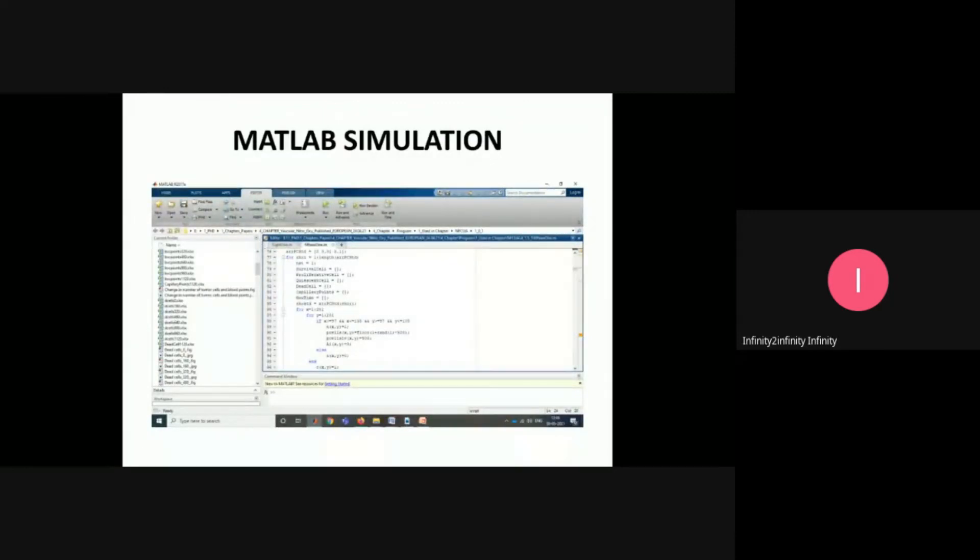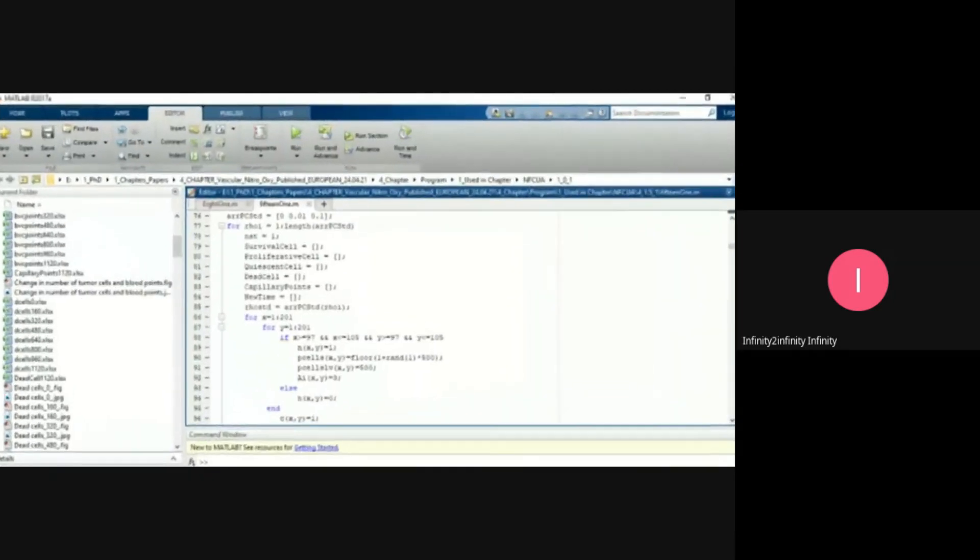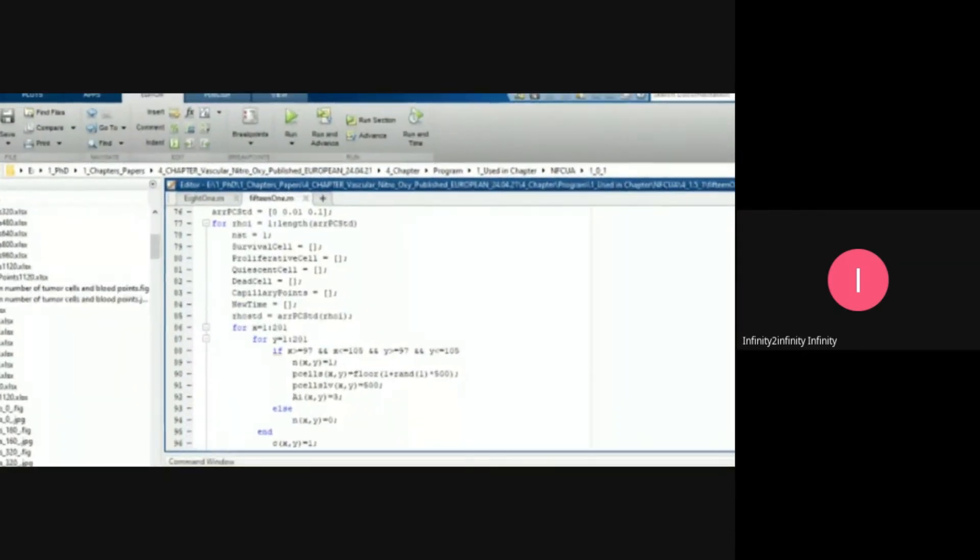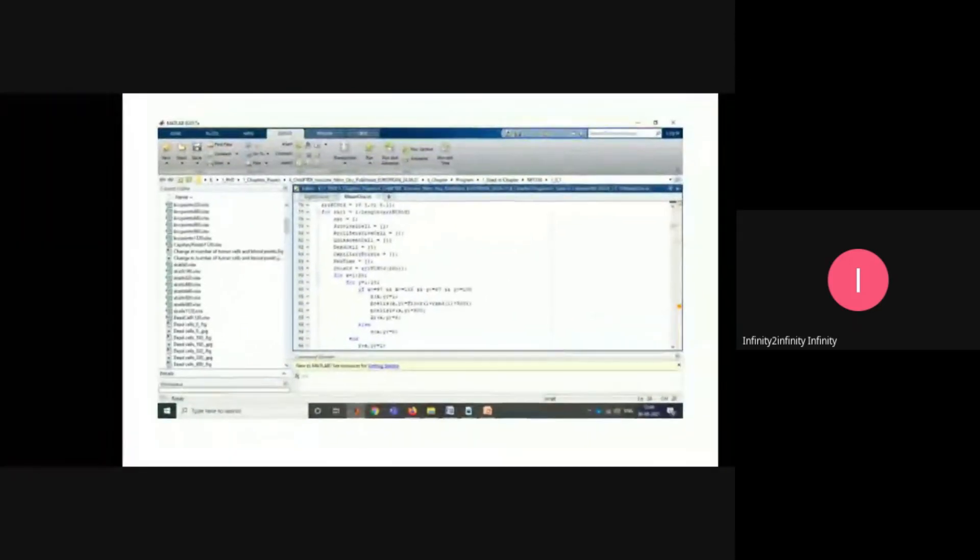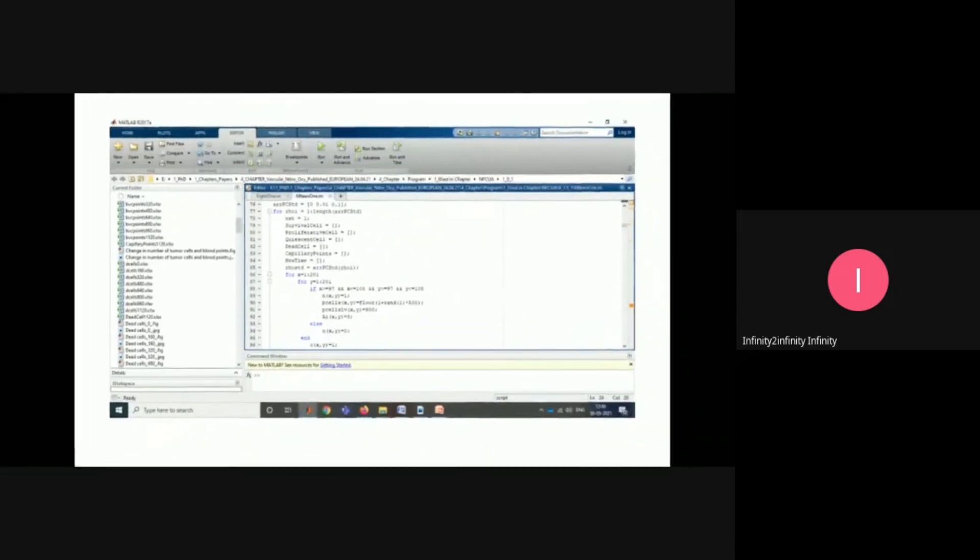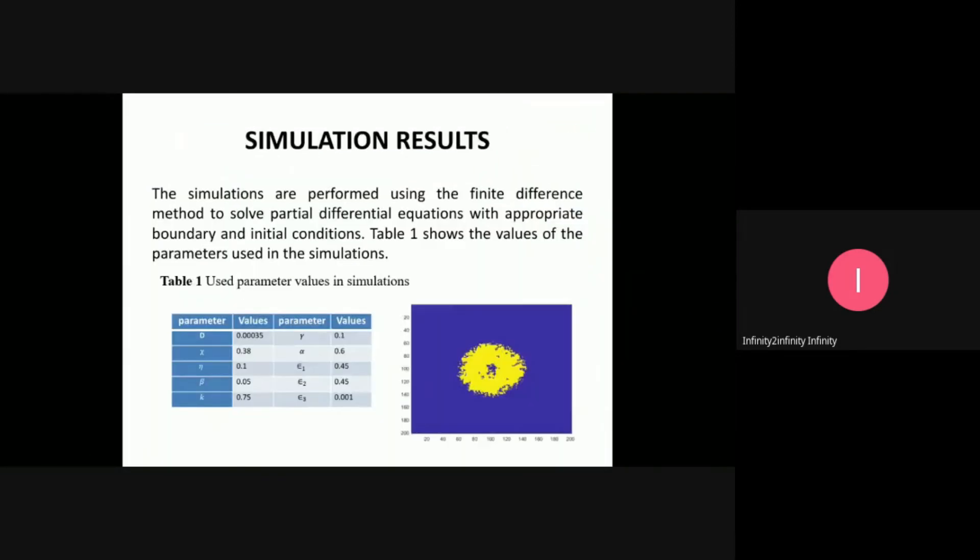The first equation was N, and now the other four equations after discretizing are F, C, U, and A. In this MATLAB simulation, there are survival cells, proliferating cells, quiescent cells, dead cells, and capillary points, which I obtained in this coding.